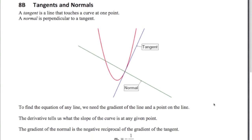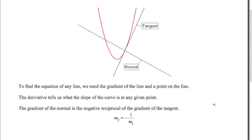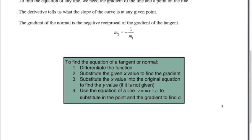Going back to coordinate geometry, we know that the relationship between a line and its perpendicular is that one gradient is the negative reciprocal of the other. So here's the process: to find the equation, we're going to differentiate the function. Remember the derivative tells us about the slope of the curve or the slope of the tangent. We substitute in the given x value to find the gradient, then substitute that x value into the original equation to find the y value if we're not given it, and then use y equals mx plus c to substitute in the point and gradient to find c, and hence get the equation of the line.